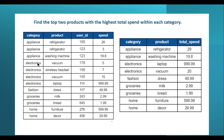For the electronics category there are three distinct products: vacuum, wireless headset, and laptop. The total spend for vacuum is 5 plus 15, which is 20. For the wireless headset it is 7, and for the laptop it is 999.99. So the top two products in electronics are the laptop with total spend 999.99 and the vacuum with total spend 20. This is how we calculate the top two products with the highest total spend in each category.